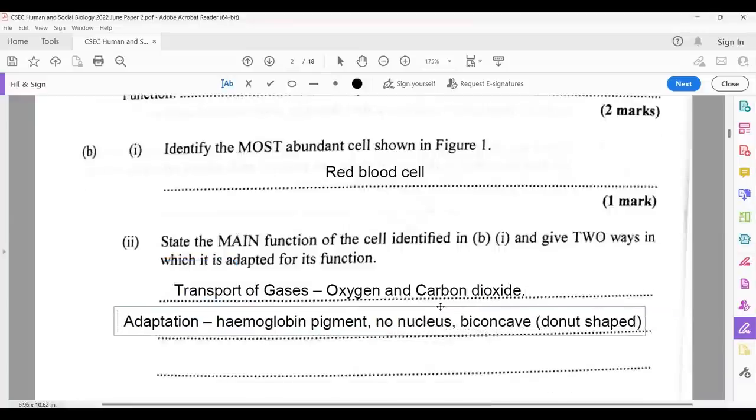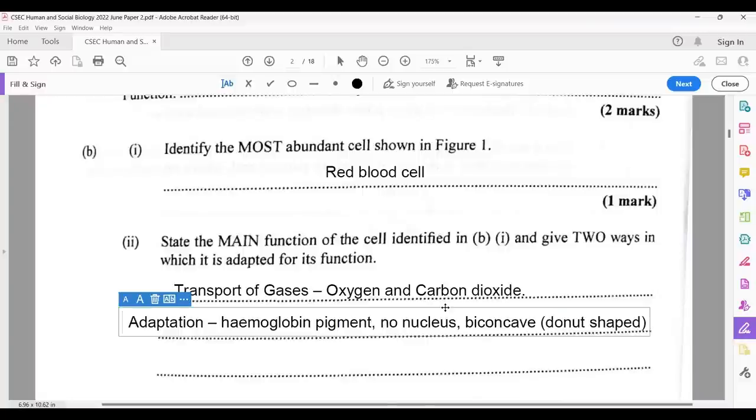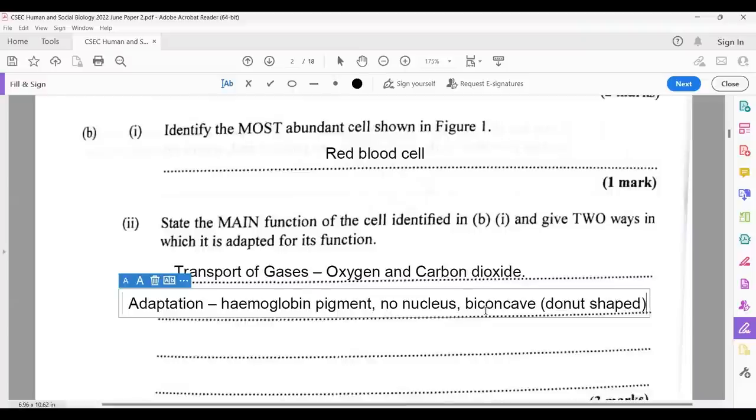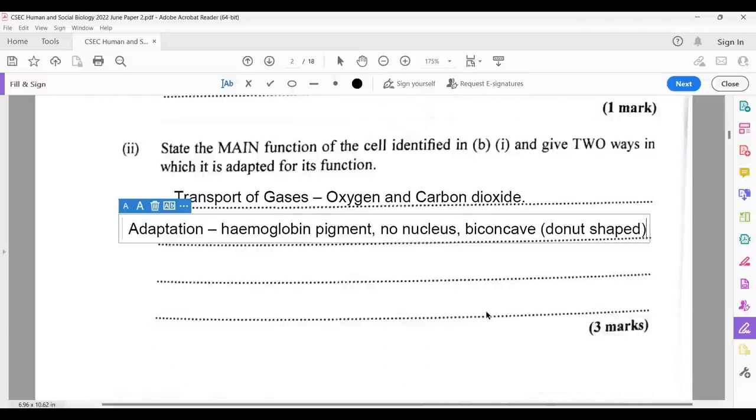They asked for two adaptations, and there are more than two adaptations. Hemoglobin pigment that gives it its red shape from the ion. They have no nucleus. They're biconcave, that donut shape. All of this helps in having more hemoglobin in cell, because you want to transport gases with the cell. So it makes sense that this cell does not have a nucleus. And there are other adaptations. You could always let us know in the comments what adaptations you chose to use.